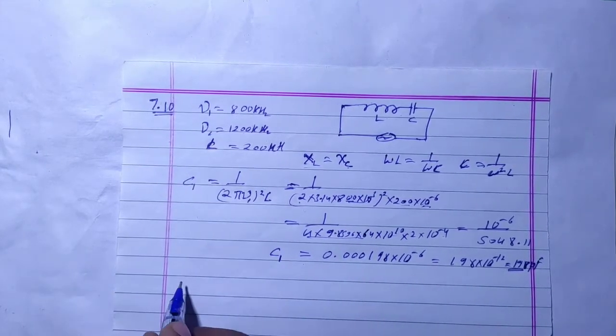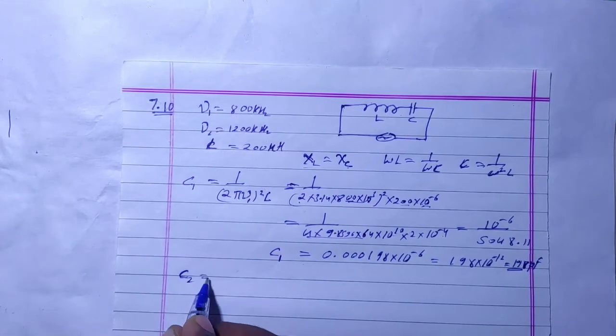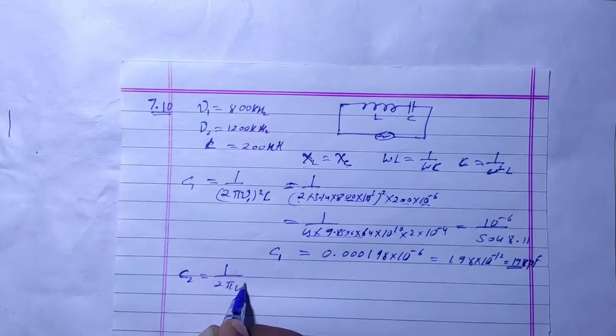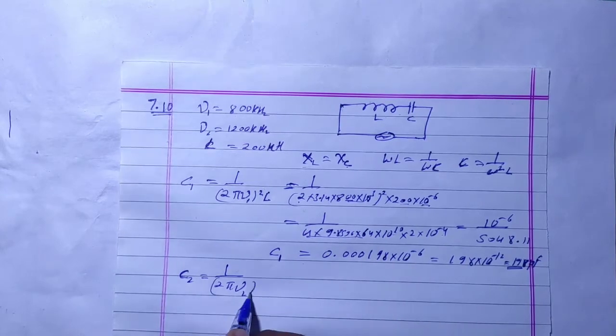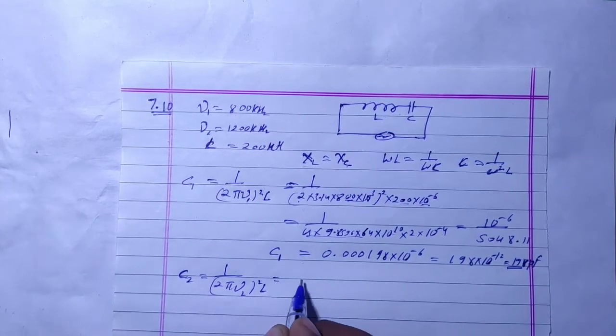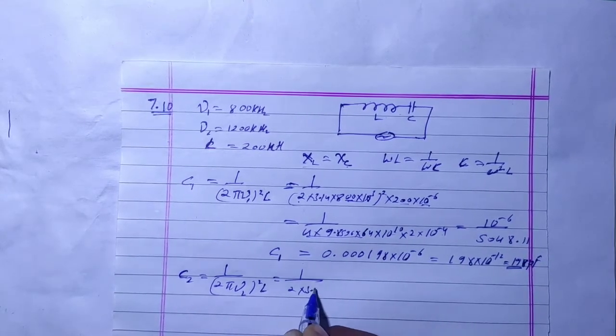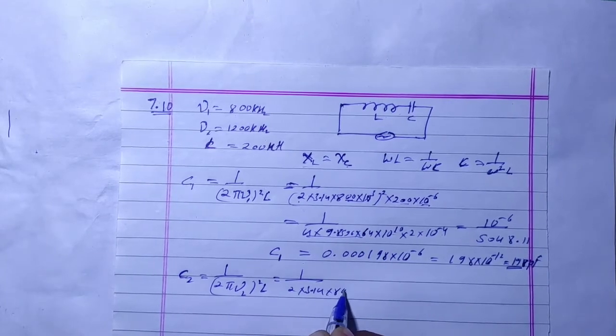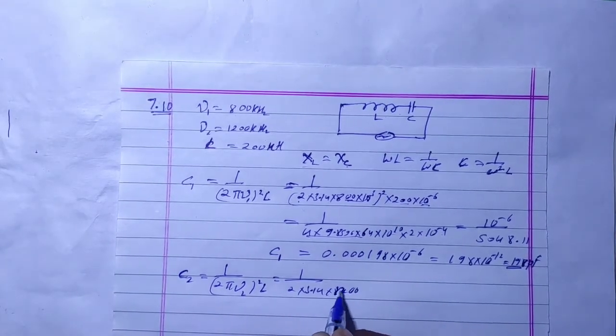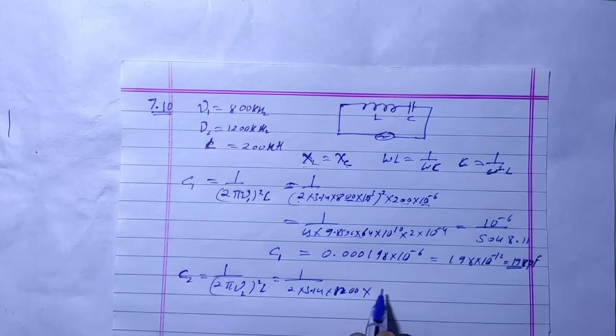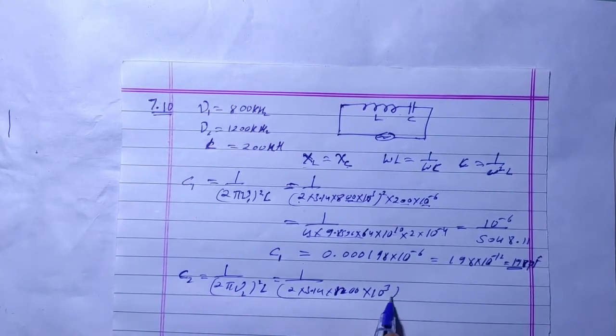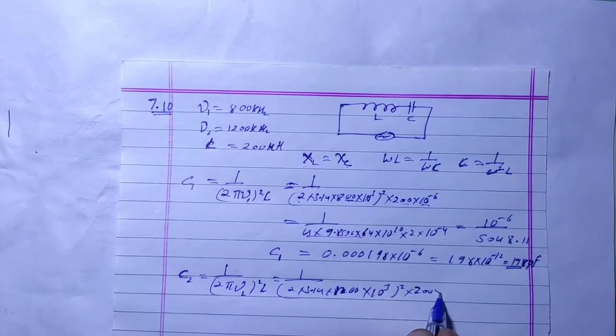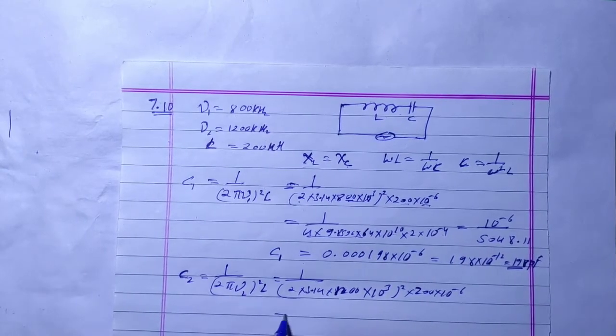Second frequency, C2 equals 1 upon 2 pi nu 2 whole square into L. Same, 2 into 3.14 into 1200 kHz, 10 power 3, whole square into L, 200 into 10 power minus 6.